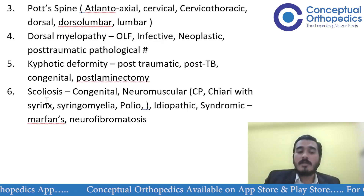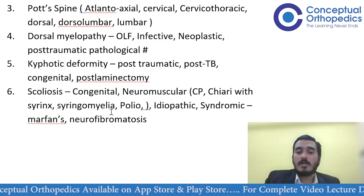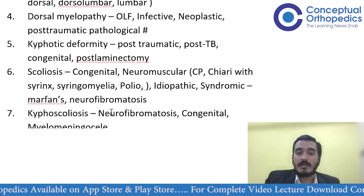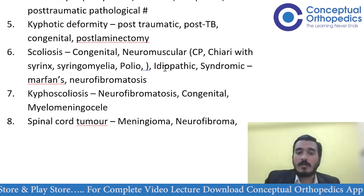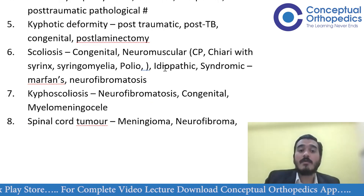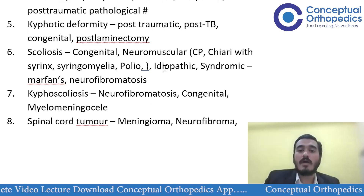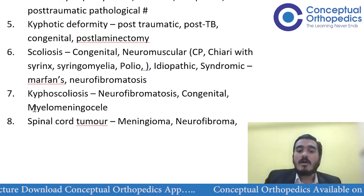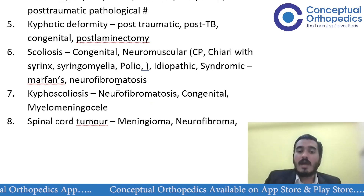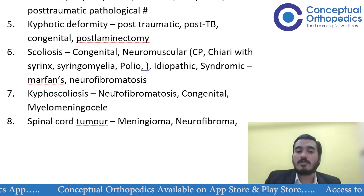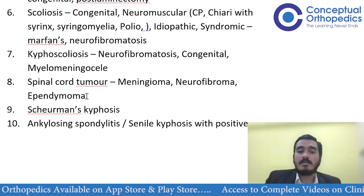Cases of deformity such as scoliosis — congenital or neuromuscular — secondary to multiple causes may also appear in the exam. Even if you are not sure of the exact cause of scoliosis, approach it as a deformity so that you are able to pass. Kyphoscoliosis, as seen in neurofibromatosis, congenital causes, or myelomeningocele, may also be present.